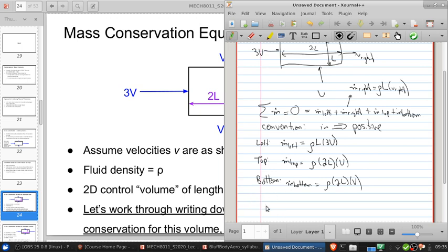So let's put all of it together. We've got 3 rho L V plus 2 rho L V plus 2 rho L V plus rho L V right equals 0.